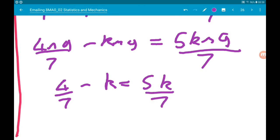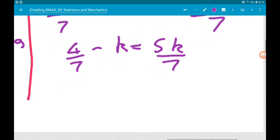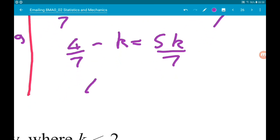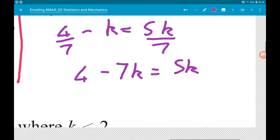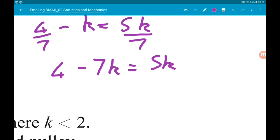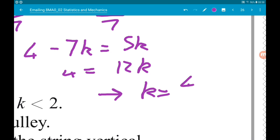Now let's multiply through by 7. So we get 4 minus 7K is equal to 5K. So we get 4 equals 12K. Therefore K is 4 divided by 12, which is one third. Cool.